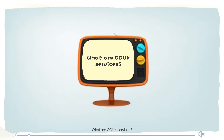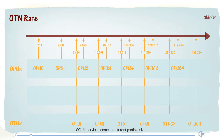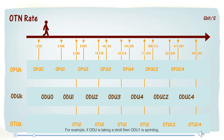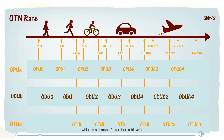What are ODUK services? ODUK services come in different particle sizes with different service rates that correspond to those sizes. For example, if ODU0 is taking a stroll, then ODU1 is sprinting. ODU2 is like riding a bike, and ODU3 is a nice and leisurely drive, which is still much faster than a bicycle. ODU Flex enables you to pick the perfect mode of transportation for your specific trip.